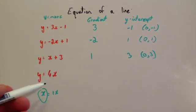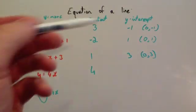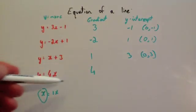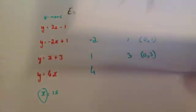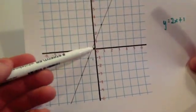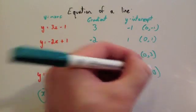And finally, y equals 4x. The gradient of this line would be 4, and the y-intercept would be, well, it's plus 0 there, so because it's got no number, it'd be plus 0. That means it would go through the origin here. So it would be 0, or you could give it as a coordinate, 0, 0.